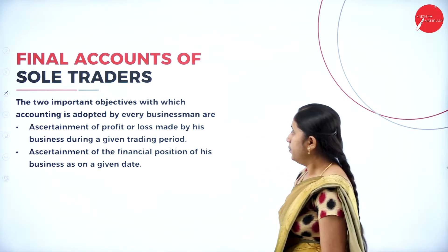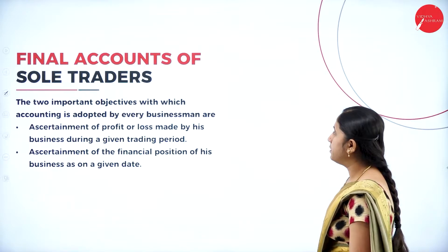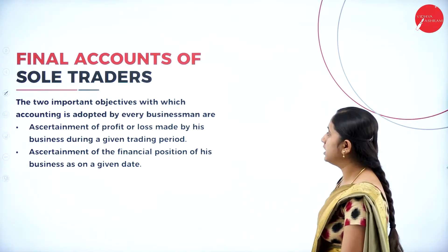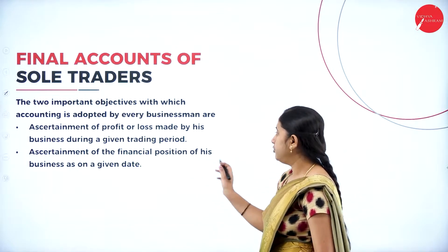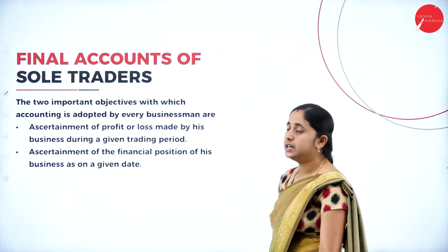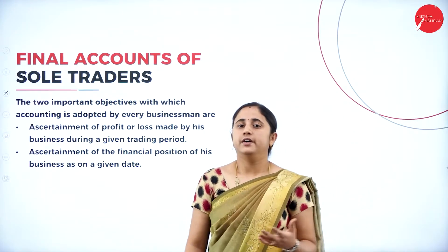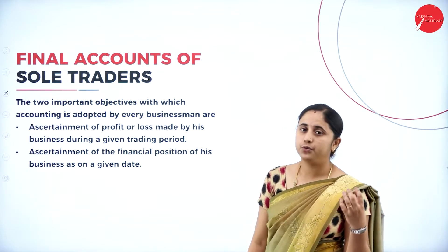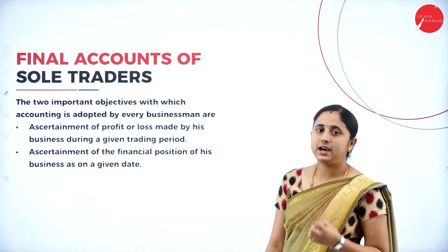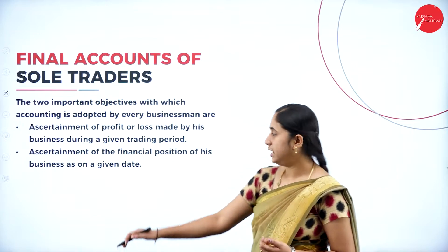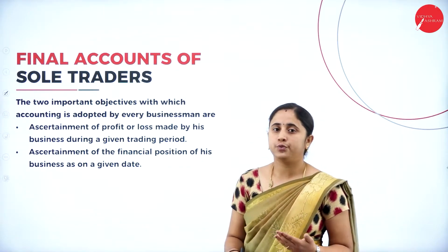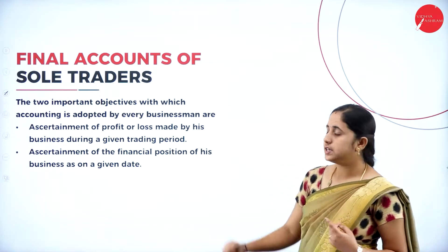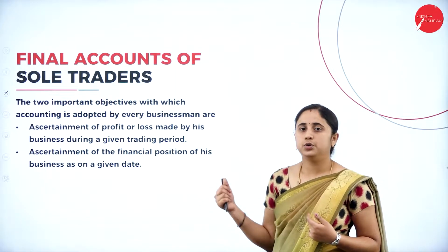The two important objectives which accounting is adopted by every businessman are: first, ascertainment of profit or loss made by the business during a given trading period, and second, ascertainment of the financial position of the business as on a given date. Every businessman adopts accounting to find the profit or loss earned during a particular period and to know the financial position of the company.